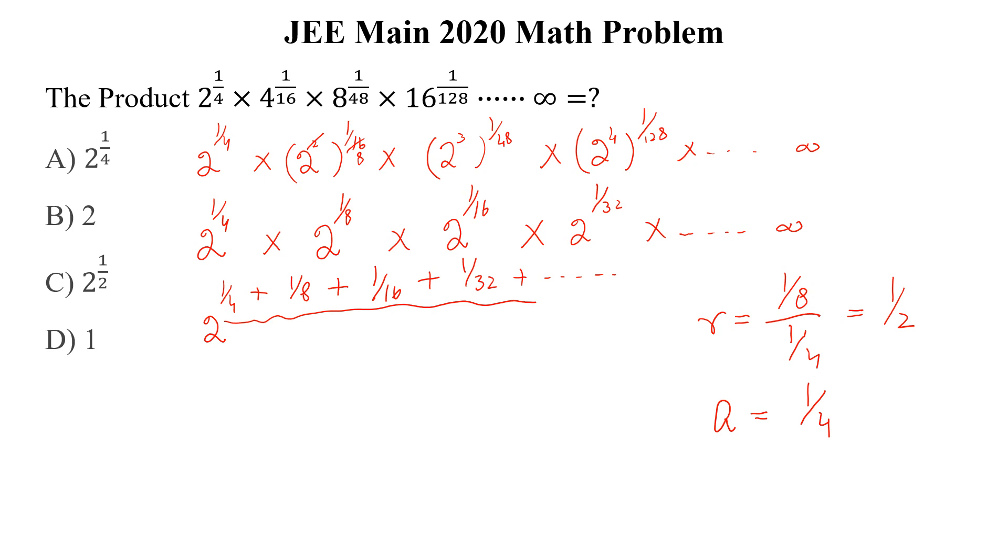So the infinite sum of this geometric series is equal to a divided by 1 minus r, where a is 1 by 4 and r is 1 by 2. This is equal to 1 by 2. So this will be equal to 2 to the power 1 by 2, and this is the correct option.